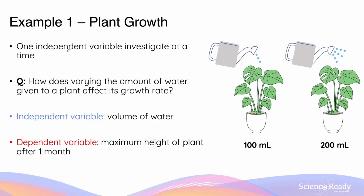These concepts are quite abstract, so let's use a simple experiment to demonstrate independent, dependent, and control variables and how they relate to validity. Say I want to measure the effect of different volumes of water on plant growth — specifically the maximum height of the plant after a particular time. For one specific experiment, you should only alter one independent variable.